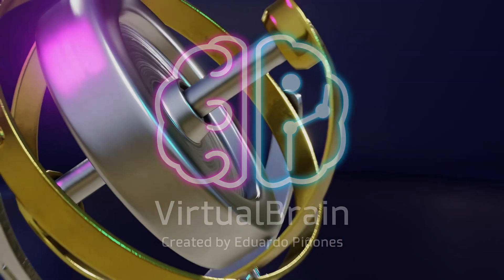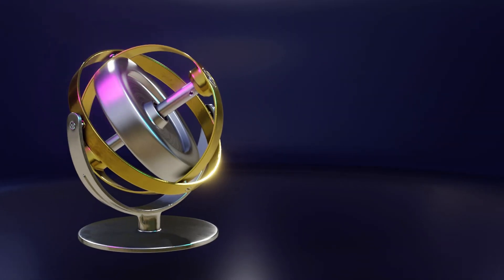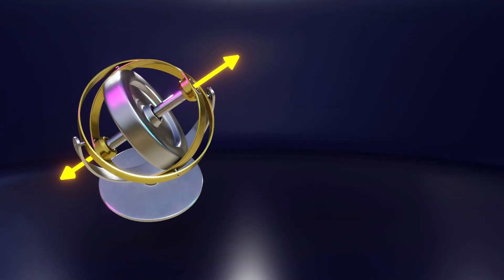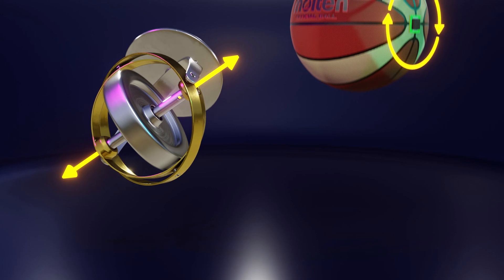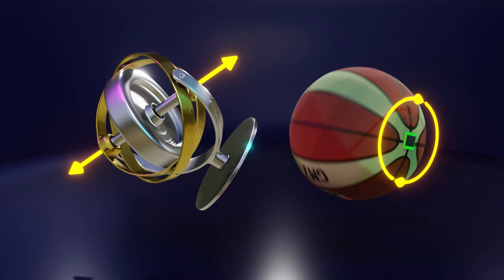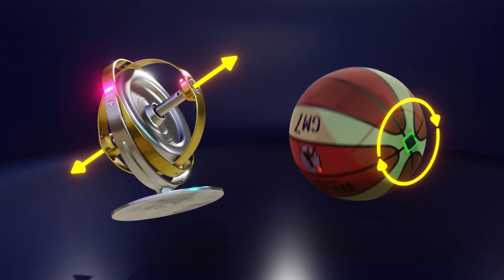A gyroscope is a device that, depending on its composition, can fulfill two functions: to provide information about the variation of the orientation of a system with respect to a reference axis, or to provide information about the rate at which the orientation of a system varies when it is rotating, that is, its angular velocity.